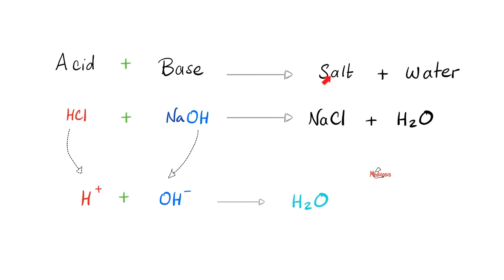Remember this: acid plus base equals salt plus water. Here's an acid, here's a base, here's a salt, here is water. Why is HCl an acid? Because it yields H. Why is NaOH a base? Because it yields OH. Get that H from here, the OH from here, you get water.